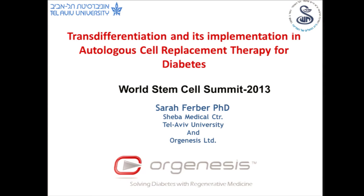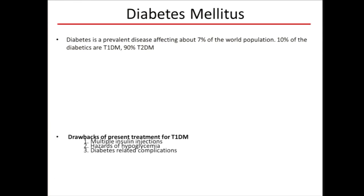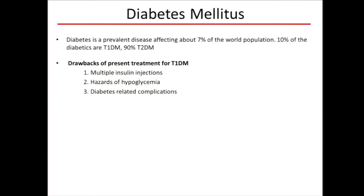Good afternoon. I will speak about transdifferentiation and its implementation in autologous cell replacement therapy in diabetes. Diabetes is a prevalent disease affecting 7% of the world population. Ten percent of these are type 1 diabetics in which pancreatic beta cells are destroyed by autoimmune attack.